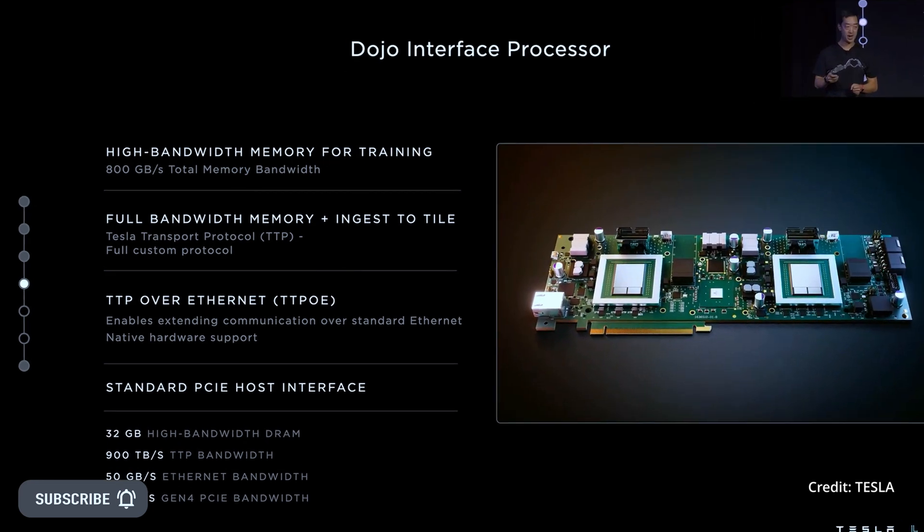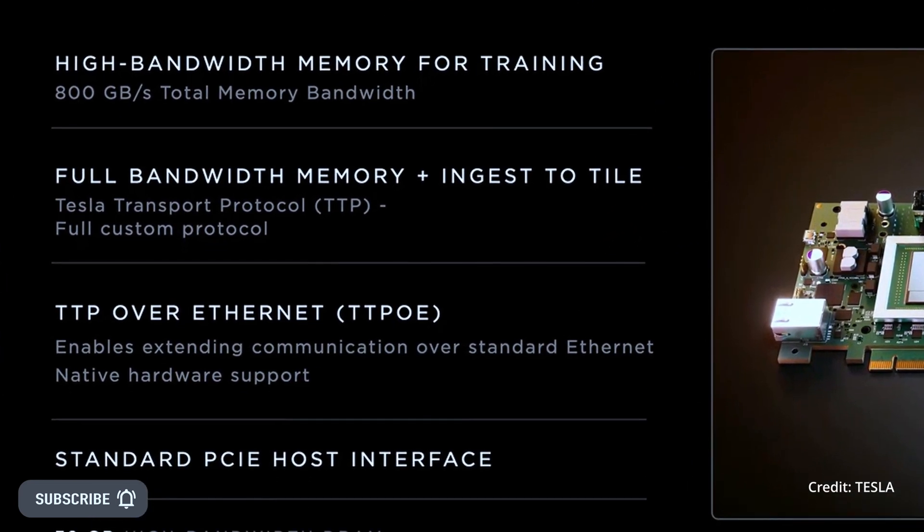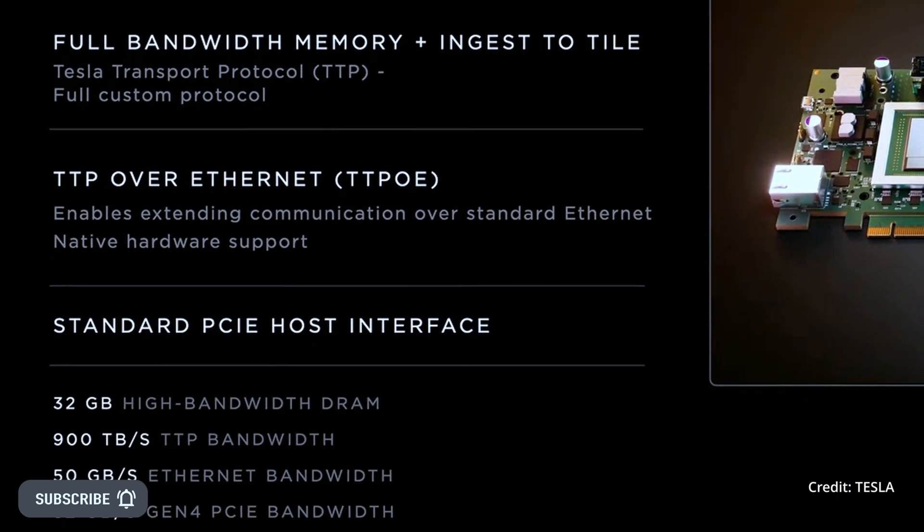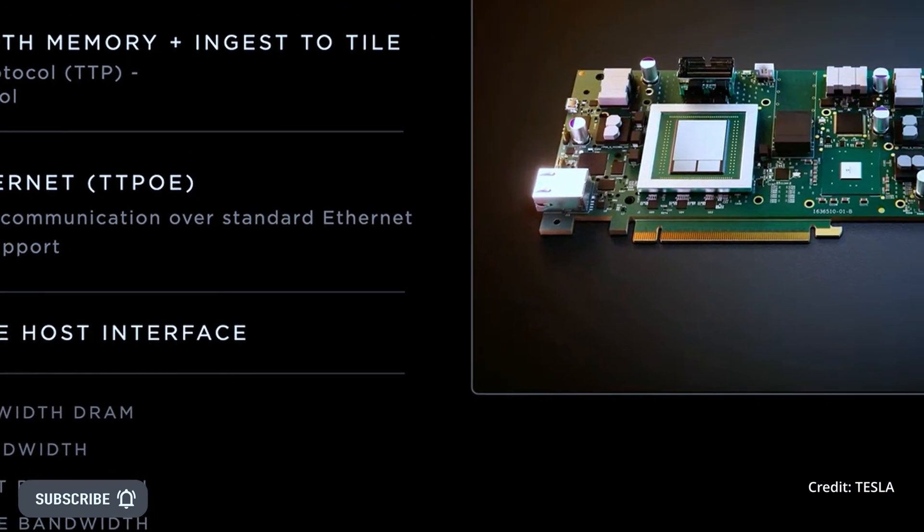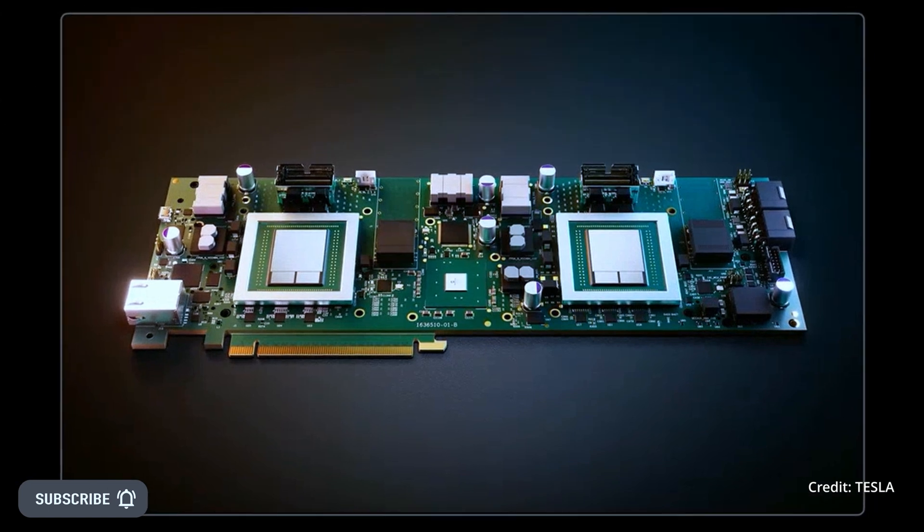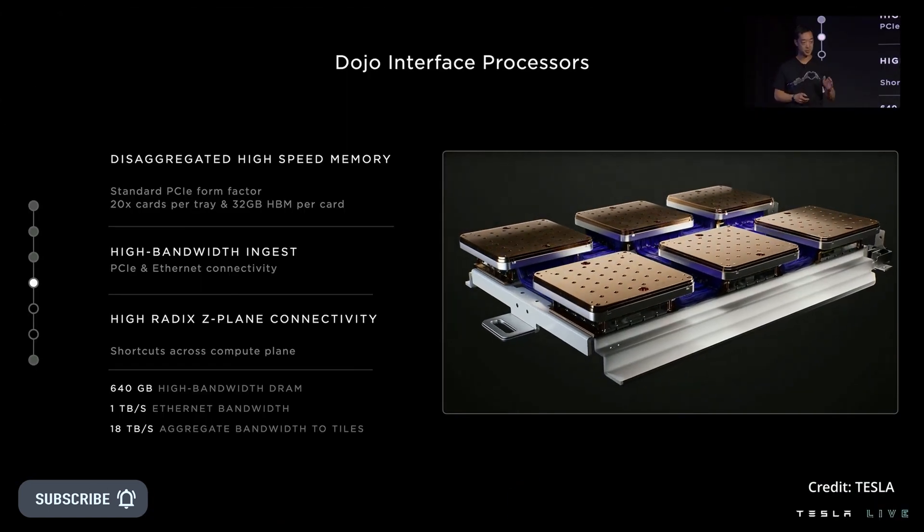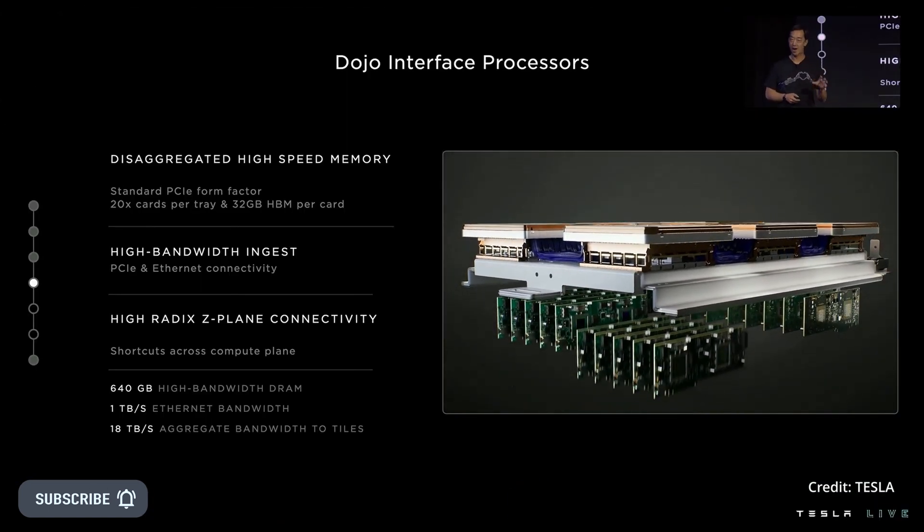1.3 terabytes of SRAM and 13 terabytes of DRAM. Dojo promises to dramatically speed up the rate at which models can be trained to improve. Tesla also has made similar promises of performance for other types of work that involve creating AI and machine learning models for autonomous vehicles.